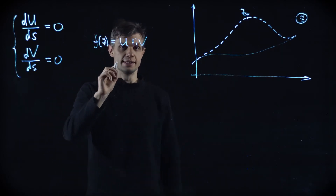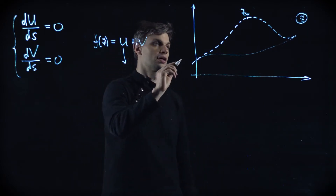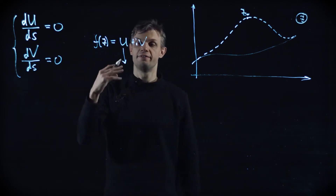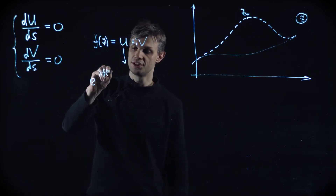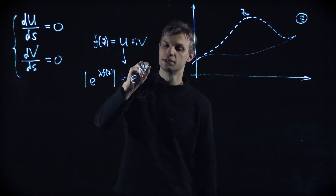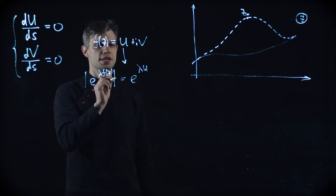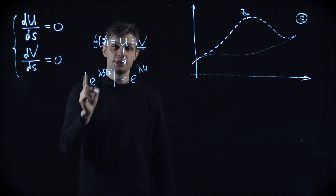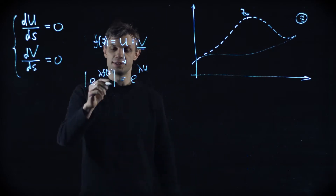We are interested in such a direction that the u function — the real part — drops in the fastest possible way. Because the modulus of the exponential function is proportional to just the real part u. But there is a danger here, because there is an additional v function, and what it does is add a phase — it basically controls the phase of our exponential function.